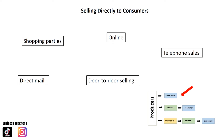Selling directly to consumers can be done via shopping parties, online, telephone sales, direct mail, and door-to-door selling. Selling directly to consumers means that the producer keeps 100% of the selling price, so they may often charge lower prices. This is beneficial as higher profits can finance more spending on advertising, product development, or website development.